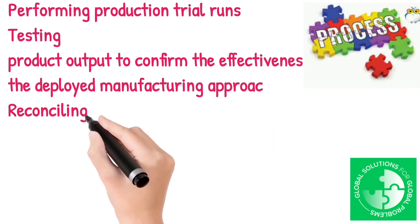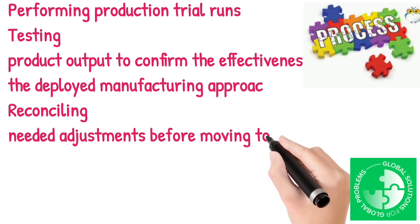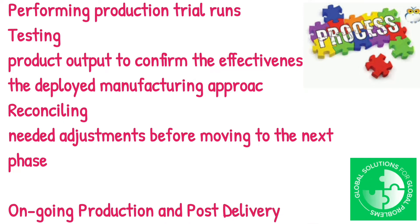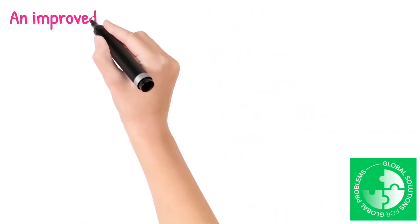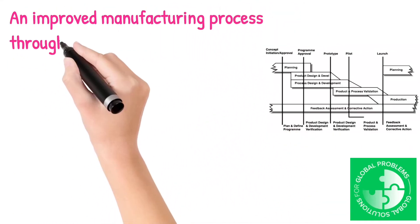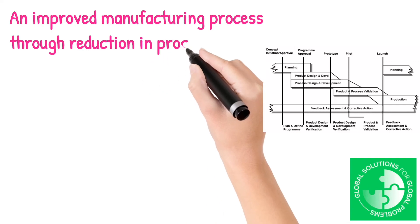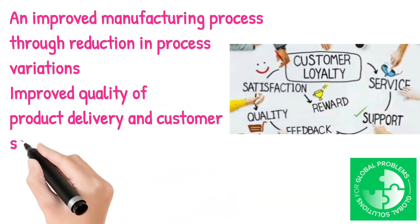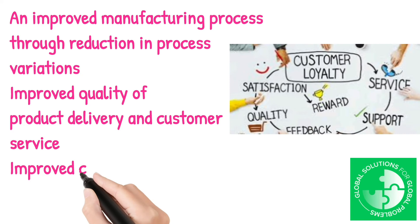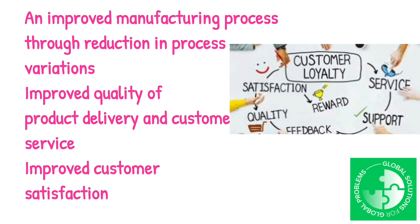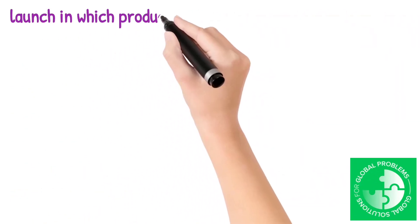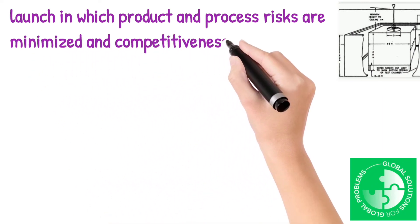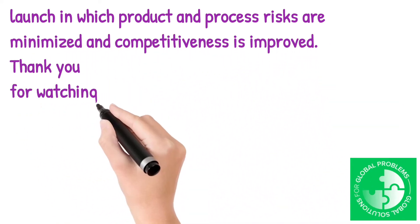Reconciling Needed Adjustments Before Moving to the Next Phase. Phase 5 - Ongoing Production and Post Delivery: Improved Manufacturing Process Through Reduction in Process Variations, Improved Quality of Product Delivery and Customer Service, and Improved Customer Satisfaction. For manufacturers, the incentive for using an APQP is the potential to achieve a successful product launch in which product and process risks are minimized and competitiveness is improved.